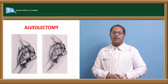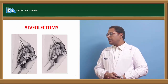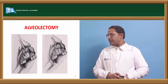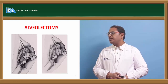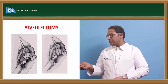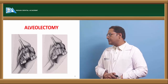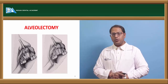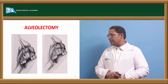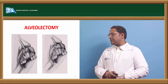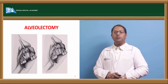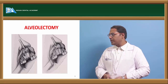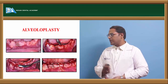Alveolectomy is what we do during extraction. After the extraction, we raise the flap and we are able to see the cortical bone present. Any bony prominence is then removed with the help of a bone file, as seen in the second picture. This procedure is called alveolectomy.